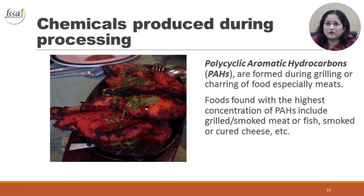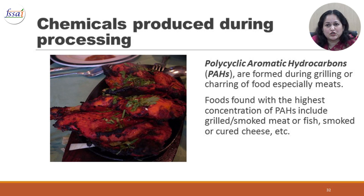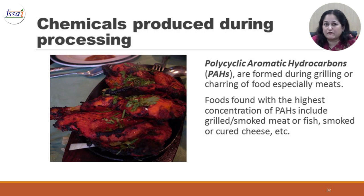Polycyclic aromatic hydrocarbons are formed during grilling or charring of food, especially meats. Foods found with the highest concentration of these include grilled or smoked meat or fish, and smoked or cured cheese. If your bread is over-toasted or you are eating meat products which are highly charred, then you are eating a whole host of these chemicals which are very harmful.